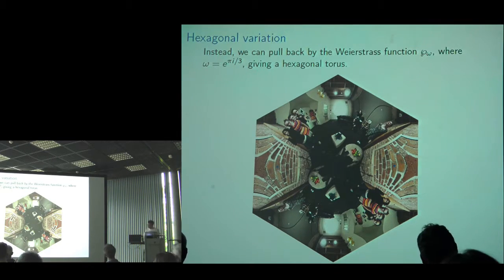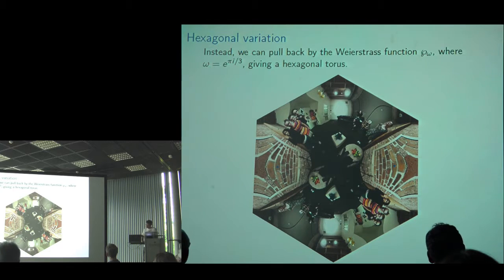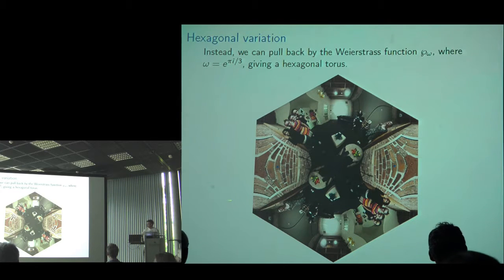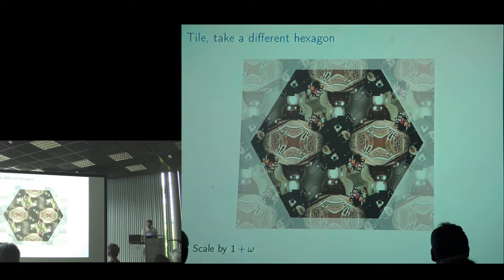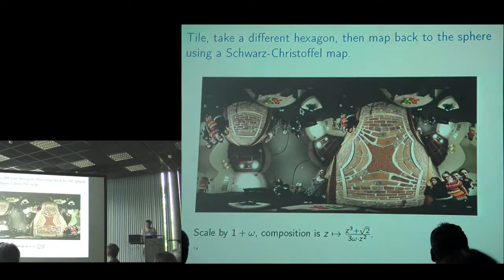There's also a hexagonal version of the Weierstrass P-function, giving a hexagonal torus — opposite sides of the hexagon glue up with a different geometry on the torus. You can scale and take a larger chunk, and this time get a three-fold branch cover.